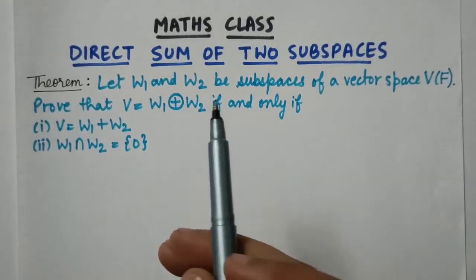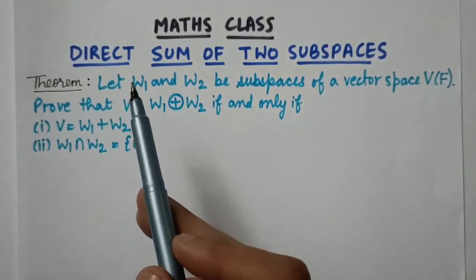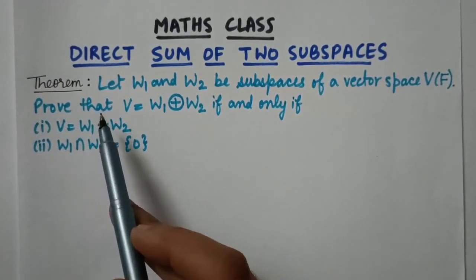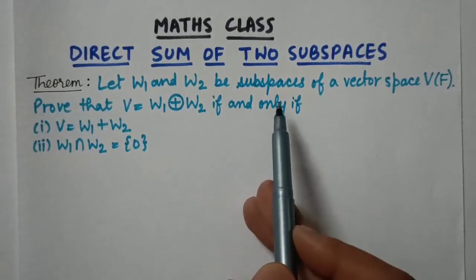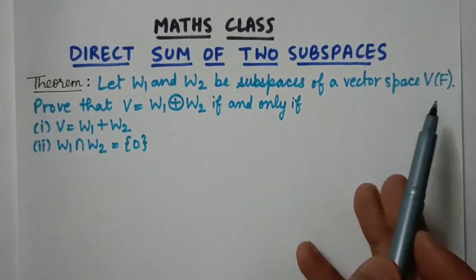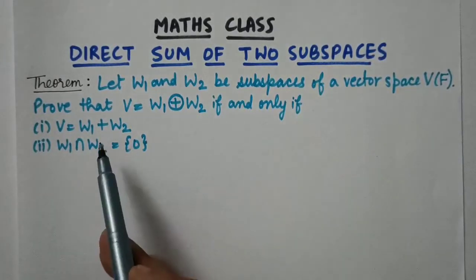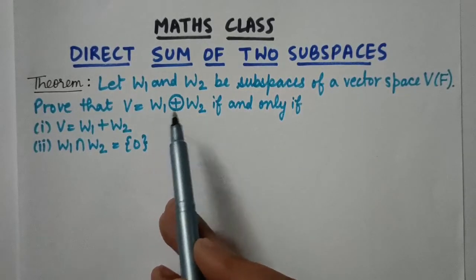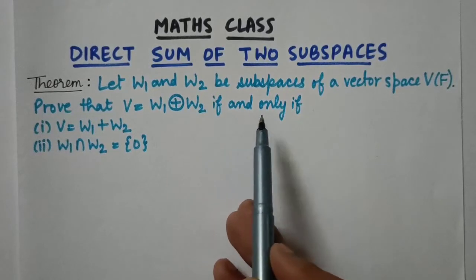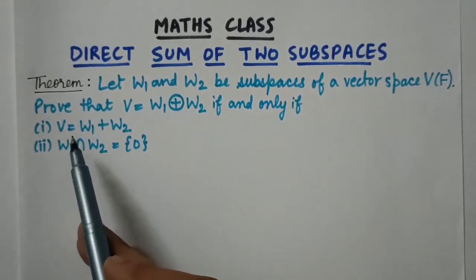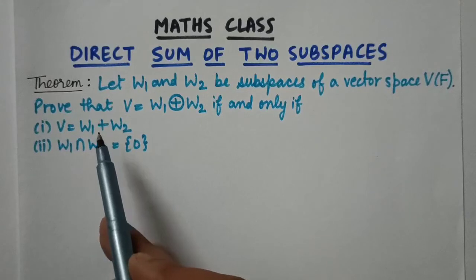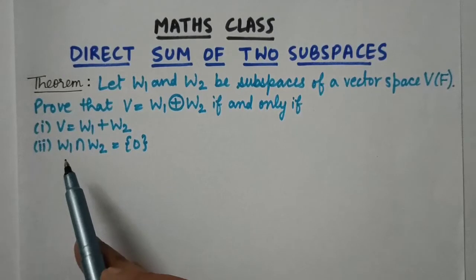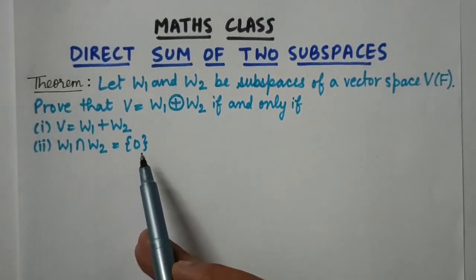Today in maths class we are going to do a theorem on the direct sum of two subspaces. The statement of the theorem is that if w1 and w2 are subspaces of a vector space v over the field f, then v is the direct sum of the subspaces w1 and w2 if and only if: first, v is the linear sum of w1 and w2, and second, the intersection of w1 and w2 is the zero element.